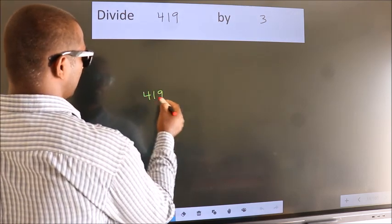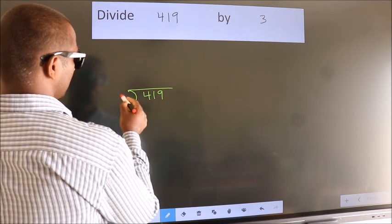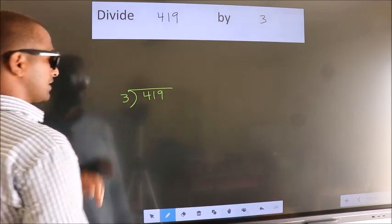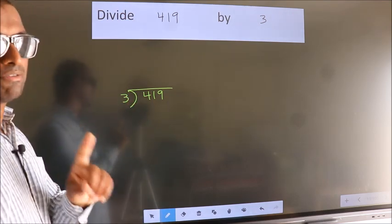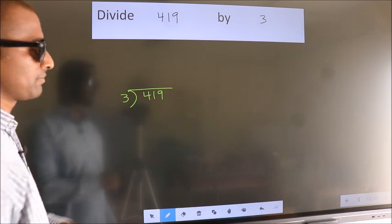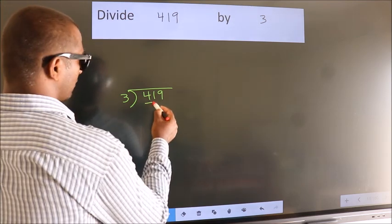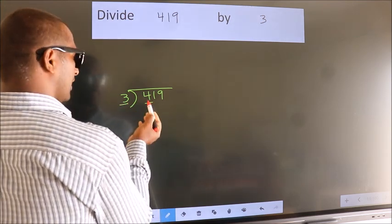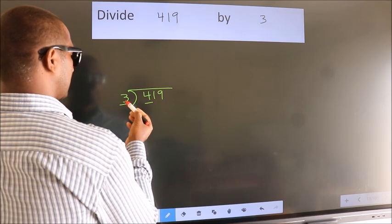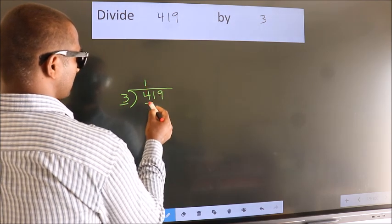419 here, 3 here. This is your step 1. Next, here we have 4, here 3. A number close to 4 in the 3 table is 3 1s 3.